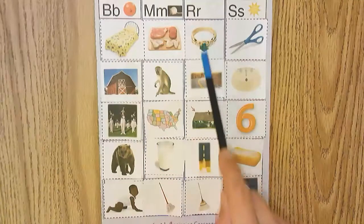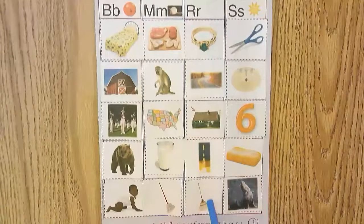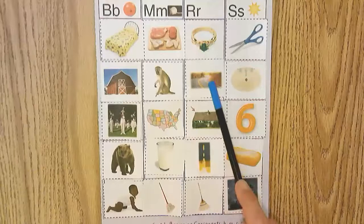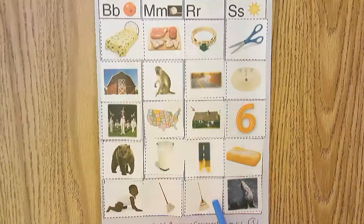These pictures here all start with the sound R. You can put them in any order as long as they're in this column. Ring, road, roof, rocket, rake.